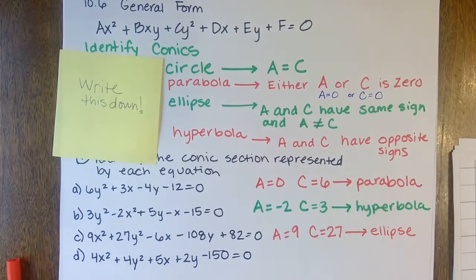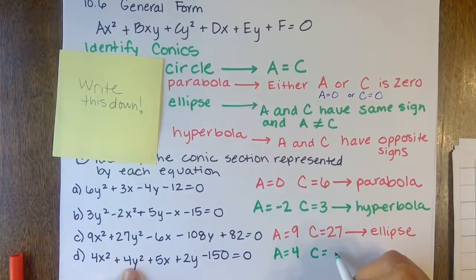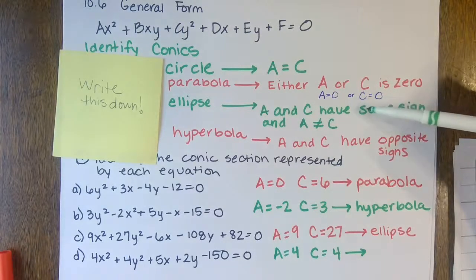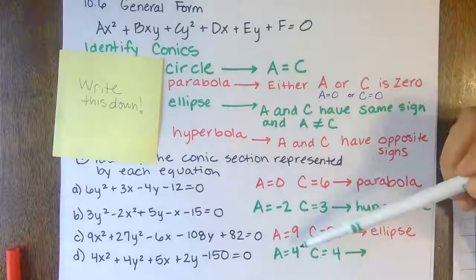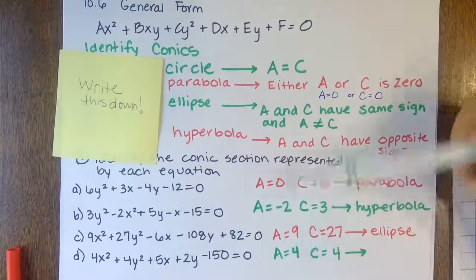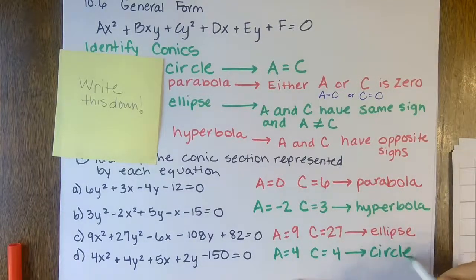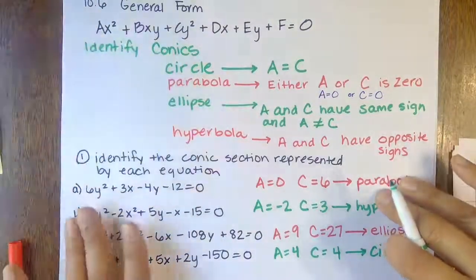The next one: A value in front of the x² term is four, and C value is also four. They have the same sign, but because they're actually the same value, it's going to be a circle — A equals C, so this is a circle.